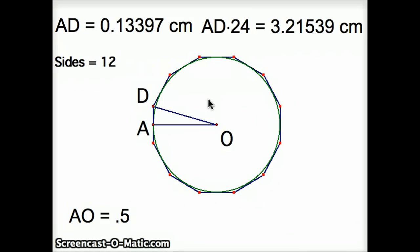Now the goal is to bump this up from 12 sides to 24 sides. To get the length of half of one side of the 24-gon, that's calculating the length of AE. We already know the length of AD is 0.13397, and we know that AO is 0.5.